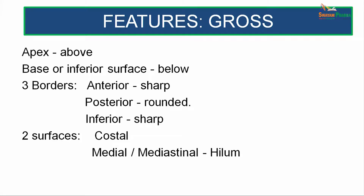Coming to the gross anatomy, the lung has an apex located above, a base which is the inferior surface located below, and three borders: a sharp anterior border, a rounded posterior border, and a sharp inferior border. The surfaces are the costal and the mediastinal surface.